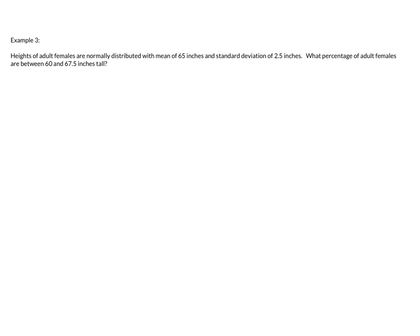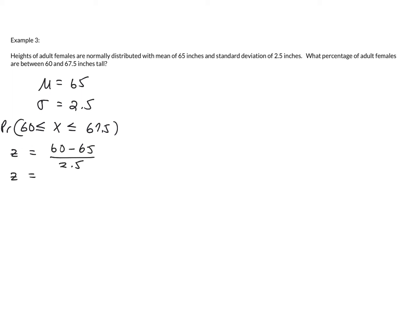Again with the same setup — heights of adult females normally distributed with mean of 65 and standard deviation of 2.5 inches — this time we want to calculate the probability that an adult female's height is between 60 and 67.5 inches. We calculate the z-score for 60, which is negative 2, and the z-score for 67.5: 67.5 minus 65 over 2.5, which equals positive 1.